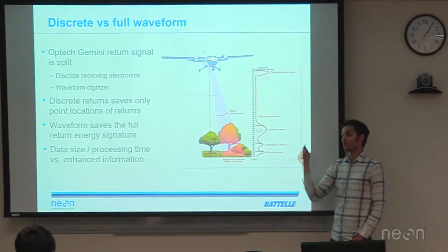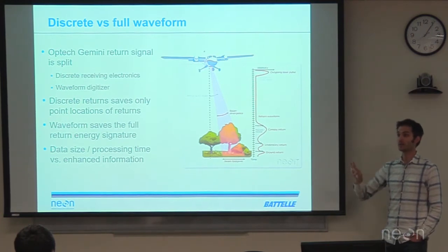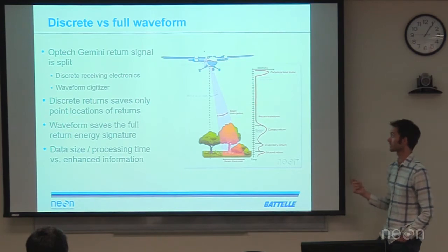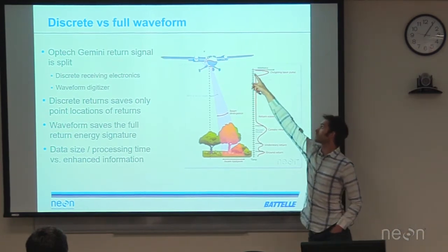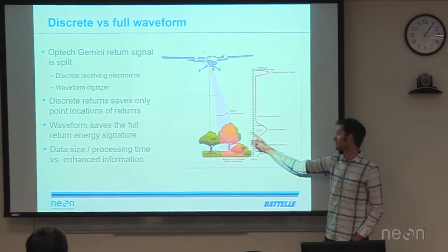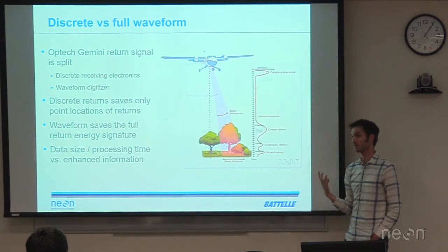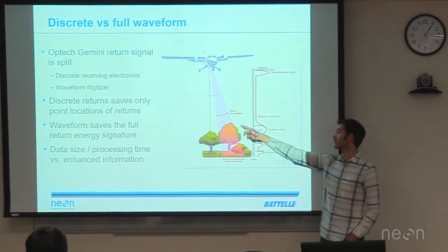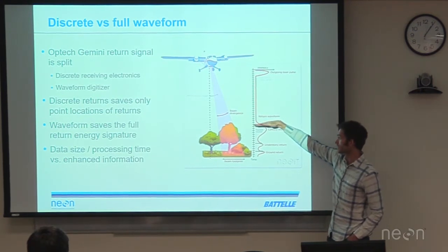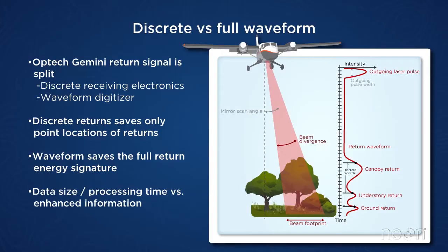With the Optech Gemini, when the signal comes back, it's split — part goes to a waveform digitizer that records the entire return energy signature. This signal includes the outgoing pulse, and then as we go through vegetation, we get humps representing additional energy returns. In discrete LiDAR, we cut off the timing at each hump to get individual points. With waveform LiDAR, we get the full return signal, enabling more advanced analysis of vegetation structure.